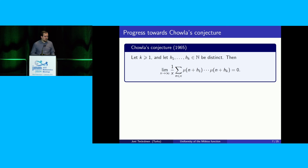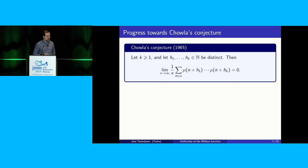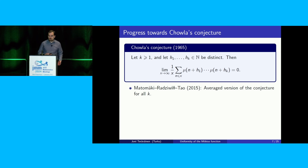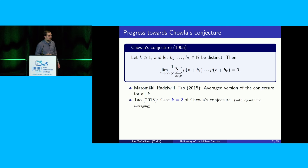This is essentially saying that the Möbius function should behave like a Bernoulli random variable. Chowla's conjecture remains open. But in the past decade there have been several advances starting with the work of Matomäki, Radziwiłł, and Tao. In 2015, they proved an average version of this conjecture, where you average over h_1 up to h_k. Also in 2015, Tao made another advance by showing that the k equals 2 case of Chowla's conjecture holds, with logarithmic weights.